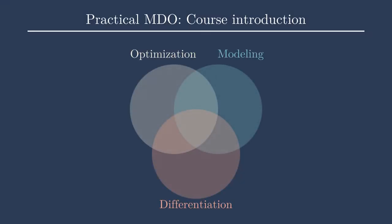I want to introduce a graphic here, and this graphic is something that we'll revisit throughout the course. It's a really neat kind of three-part Venn diagram, and the idea here is that there are three main categories of ideas that we need to understand to do practical MDO. One is optimization, of course, as you might have guessed. Another is modeling, and the last is differentiation.